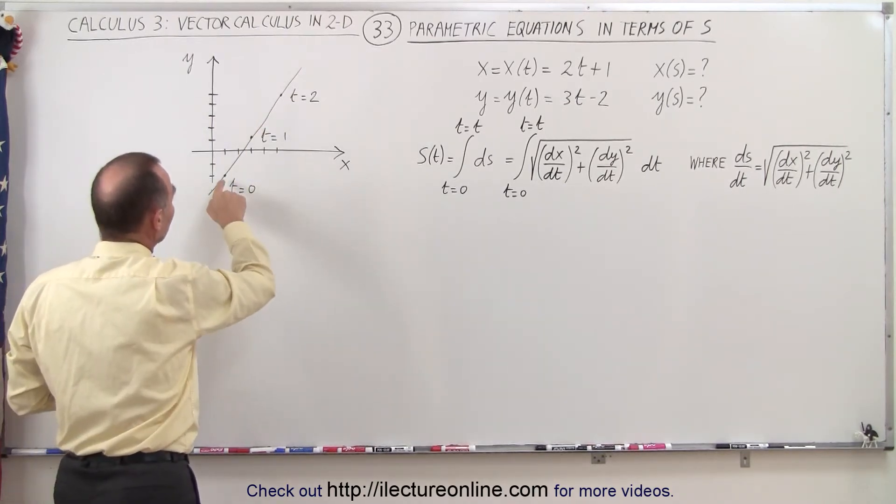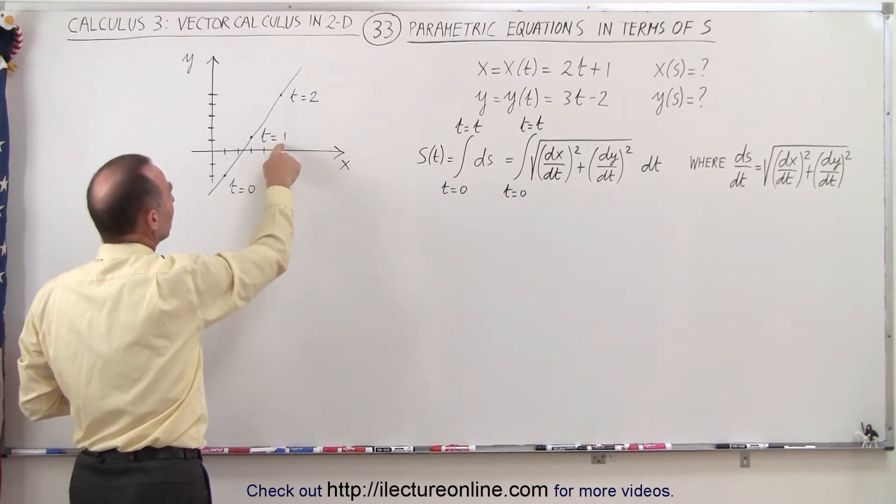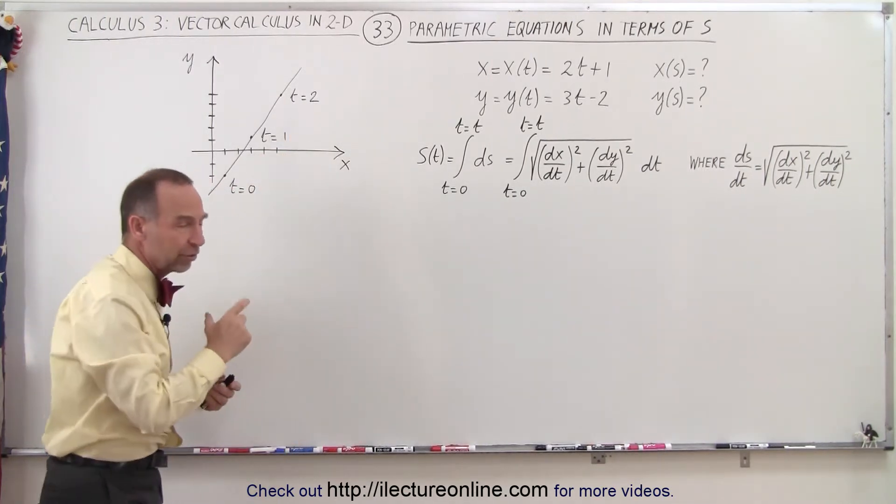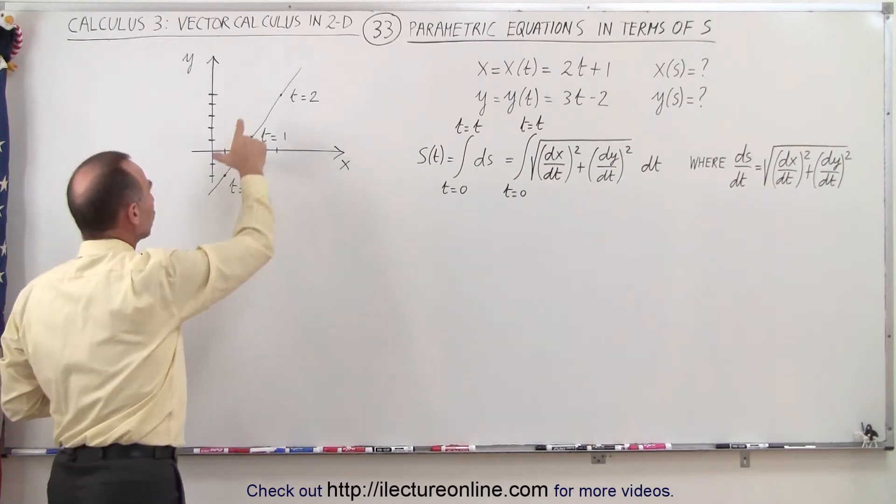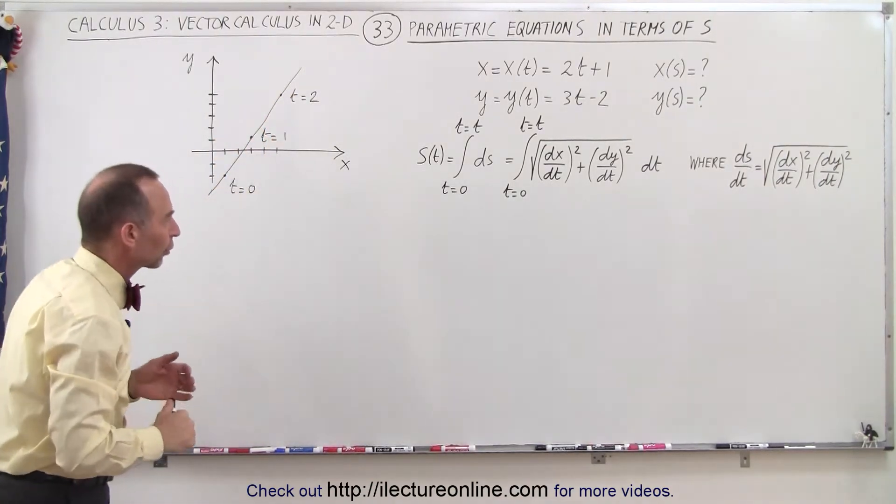And so here's an example. This location on the graph when t is equal to 0, when t is equal to 1, when t is equal to 2 and so forth. So you see there's a constant change when we go from 1 to 2 to 3 to 4 and so forth on the curve.